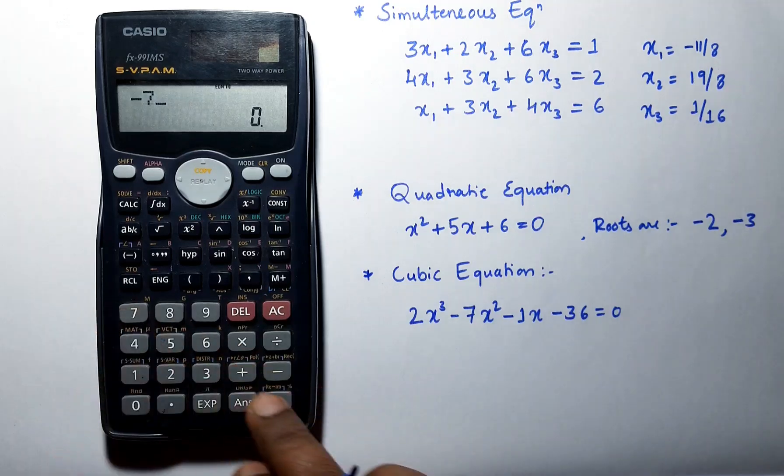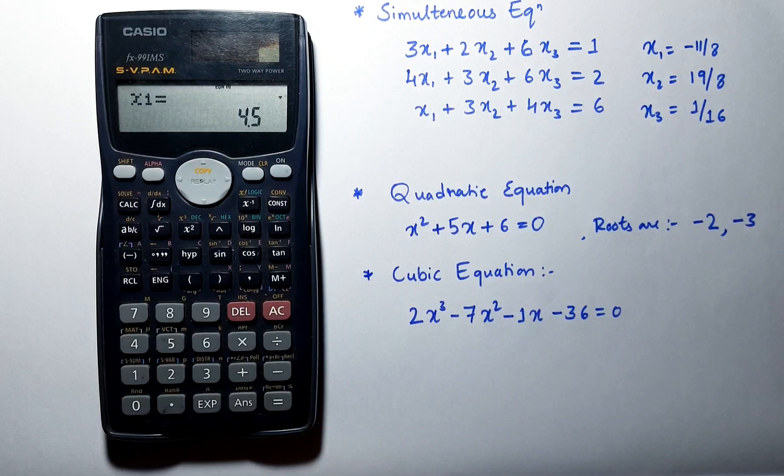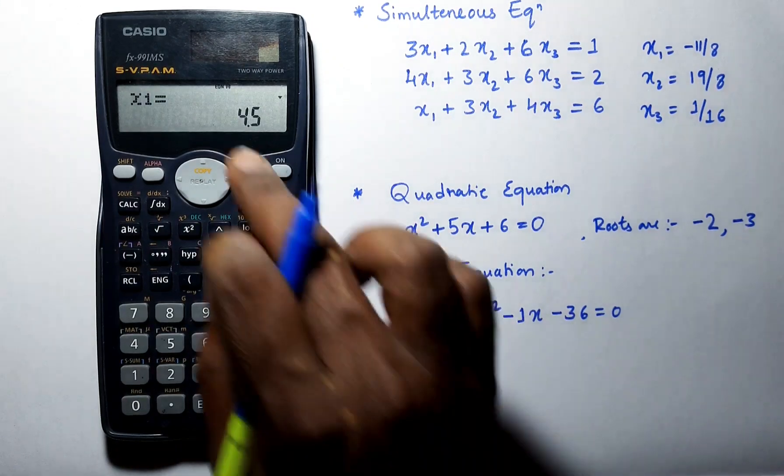Enter the coefficients as 2, minus 7, minus 1 and minus 36, and we are getting the roots as